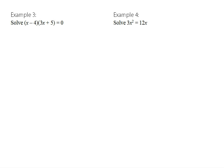When solving a quadratic by factorizing, there are three steps: make one side equal to zero, factorize the other side, and use the null factor law. The null factor law is based on the fact that if AB = 0, then either A = 0 or B = 0 or both. That's the whole premise — make one side zero so you can form a product equaling zero, then apply this idea.